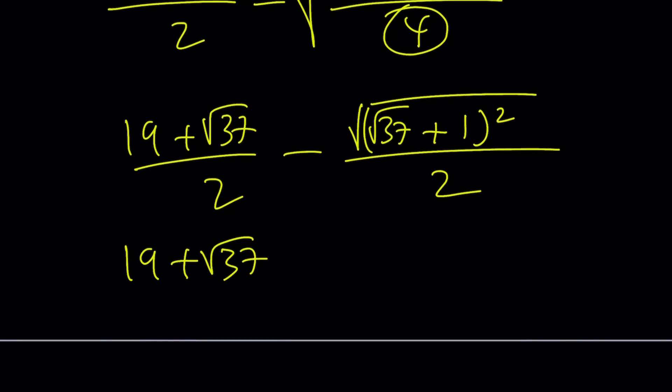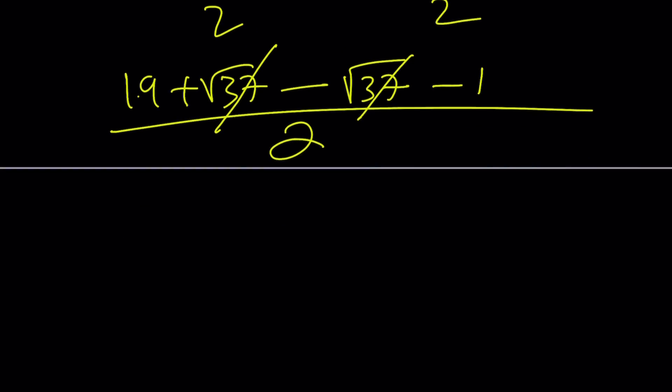This is going to be minus root 37 minus 1 divided by 2. Root 37 is going to cancel out. 19 minus 1 is 18. 18 divided by 2 is going to be 9. So the answer should be 9.